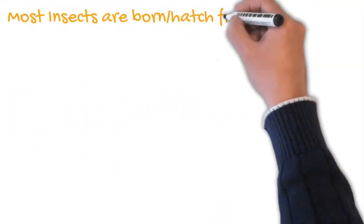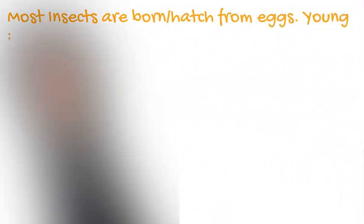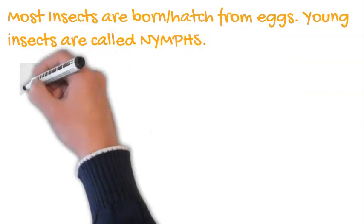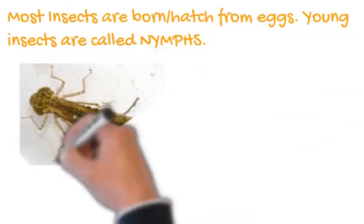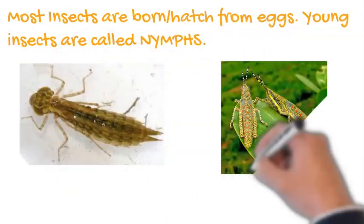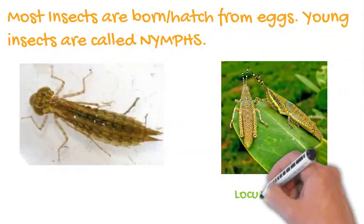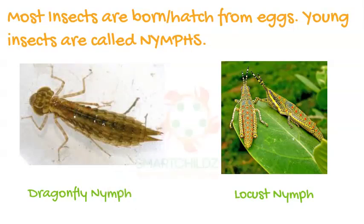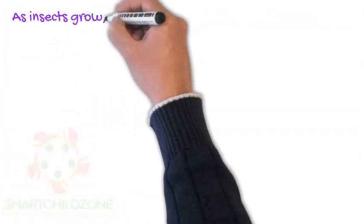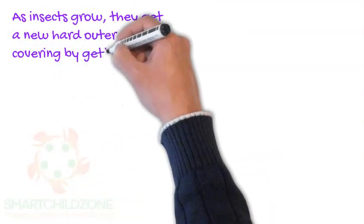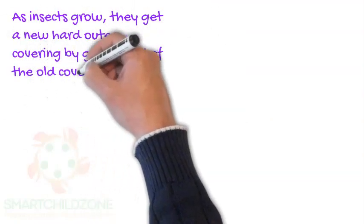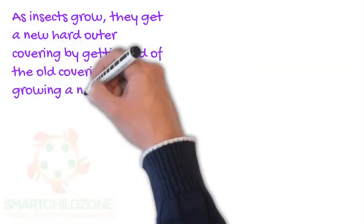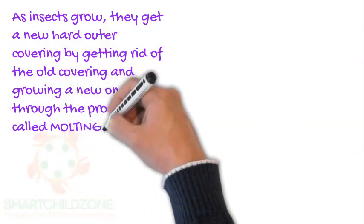Most insects are born or hatch from eggs. Young insects are called nymphs — examples include the young of dragonflies and locusts. As insects grow, they get a new hard outer covering by getting rid of the old covering and growing a new one through a process called molting.